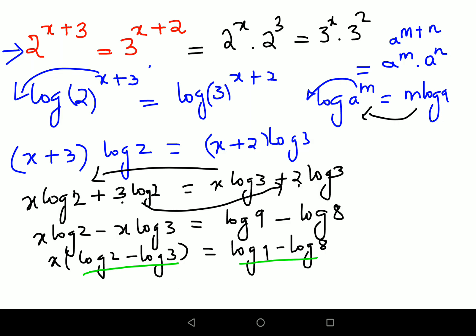Obviously in order to find the value of x, we will divide both sides by log 2 minus log 3. Therefore I can say x value will be log 9 minus log 8 upon log 2 minus log 3. This, my dear friends, is your final answer for this particular question.